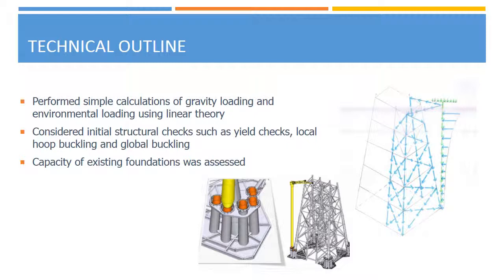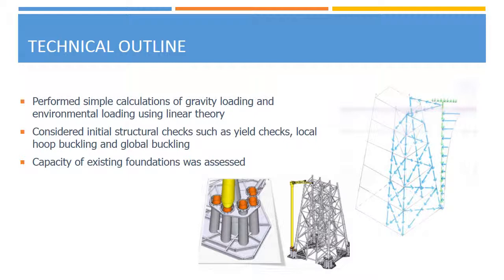The main risks include possible collision of the unit with the existing structure during installation, failure of foundations, and lack of industry precedence. To summarize, this proposal is a cost-effective, novel solution which minimizes loads on the existing structure and addresses the issue of limited space. It is also relatively easy to construct and install. However, the monocolumn is susceptible to corrosion and buckling. Therefore, a full assessment of the existing structure and its foundation is required.